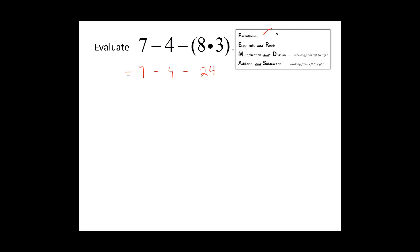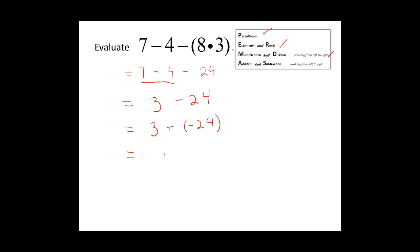We write the rest of the problem down and go on to the next step. There are no exponents and roots, and no multiplication and division, so we go to addition and subtraction from left to right. Seven minus four equals three. Now we compute three minus twenty-four by adding the opposite: three plus negative twenty-four. The signs are different, so we subtract and get twenty-one, keeping the sign of the dominant number. Our answer is negative twenty-one.